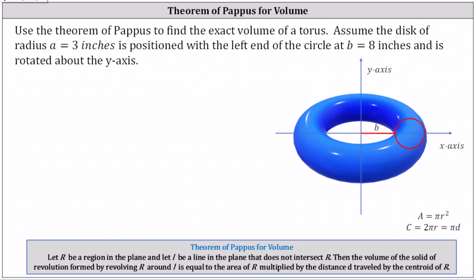We know the radius of this red circle is equal to three inches. And we know the left edge of the circle is eight inches from the axis of rotation, or the y-axis. So we know B equals eight.